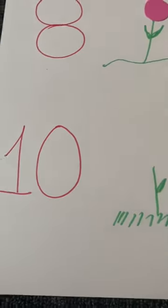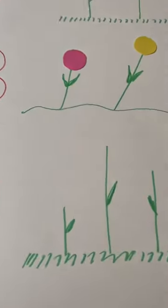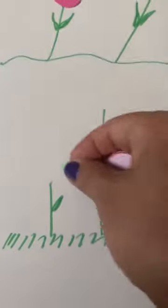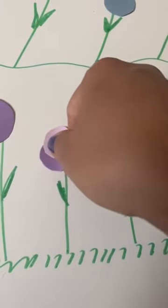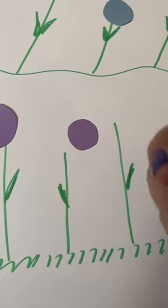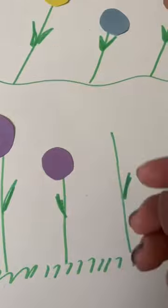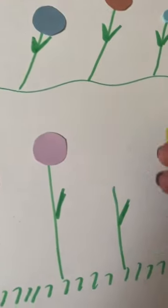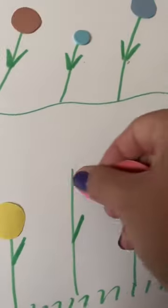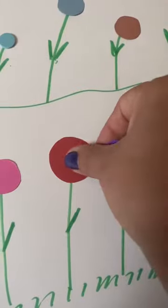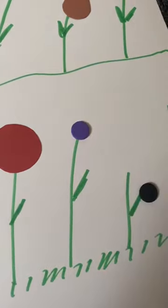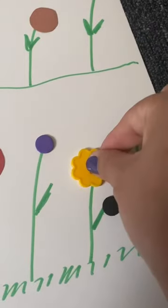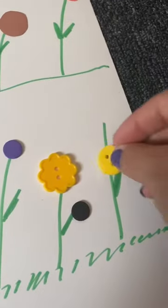And the last one is a number... what number is it? Ten! So we're gonna count ten flowers. Ready? One, two, three, four, five, six, seven, eight, nine, and ten. Look at that!